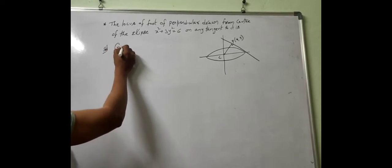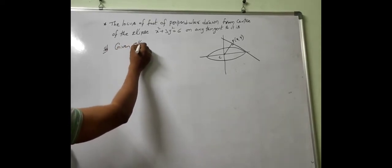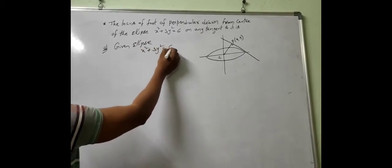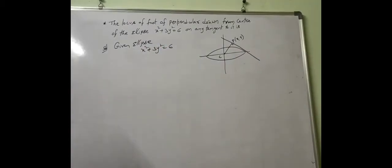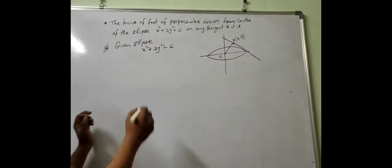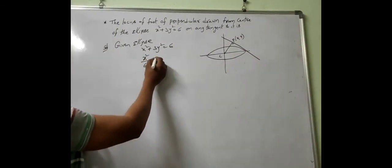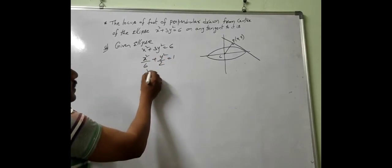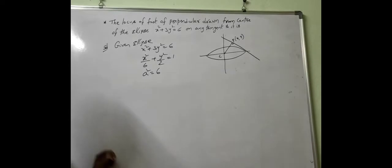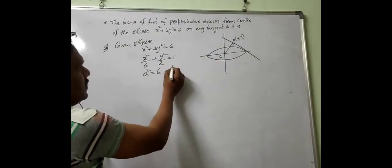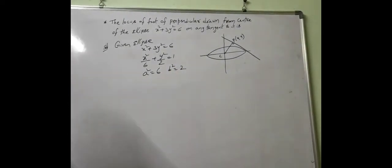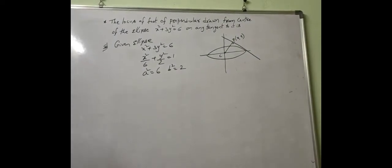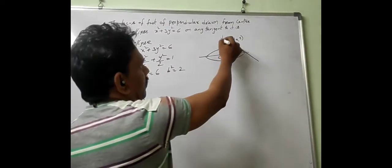The given ellipse equation is x² + 3y² = 6. Converting to standard form gives x²/6 + y²/2 = 1. So the value of a² is 6 and the value of b² is 2.